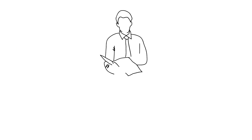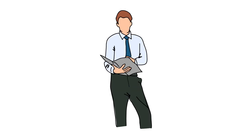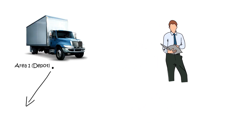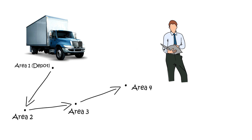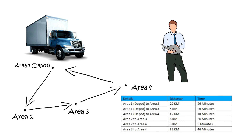The manager has to decide the optimal route to cover all these areas. He can go from area 1 (Depot) to area 2, then from area 2 to area 3, from area 3 to area 4, and finally come back from area 4 to the Depot, that is area 1. In this example, he has two constraints: distance and time.